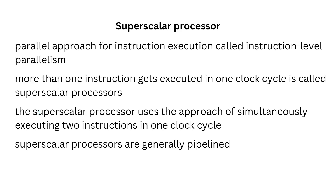Superscalar processors are generally pipelined. However, pipelining is different from superscaling in that superscalars allow execution of multiple instructions in parallel using multiple execution units, while pipelining uses a single execution unit divided into multiple phases in order to execute multiple instructions.